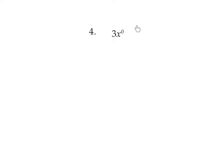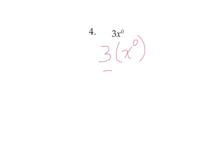Here we have something getting a little more complicated. What you have to recognize here is that this zero exponent is only on the x. It's not on the 3, because the x and the 3 are not connected together. The rule with exponents is it only applies to the base it's right next to. So we know that this is going to be a 3 times x to the 0 power. Well, x to the 0 power is 1, so 3 times 1 is 3.